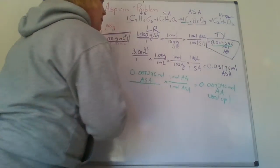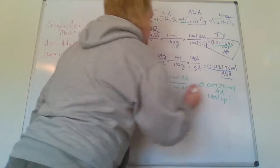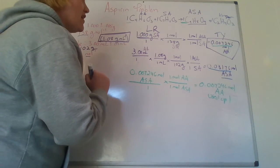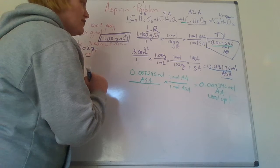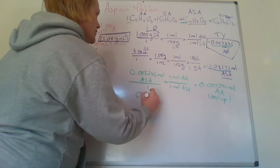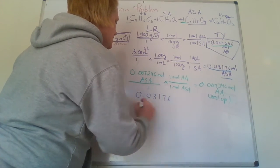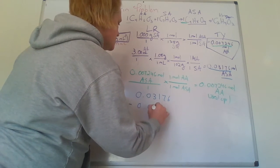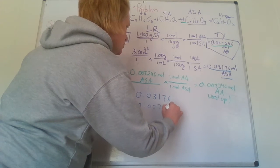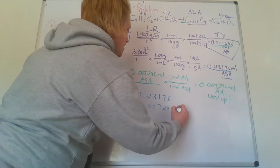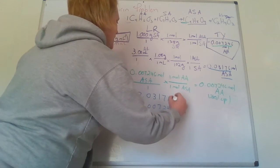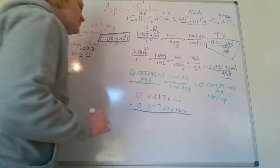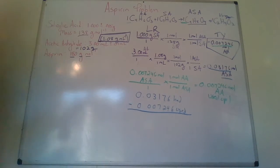I'm going to take the amount of acetic anhydride that I would have had, the 0.03176. Subtract from that the 0.007246 that I used, and I will find that I will have created.